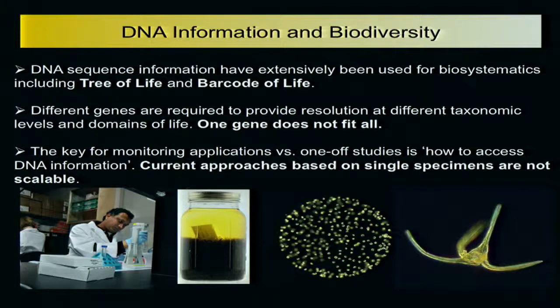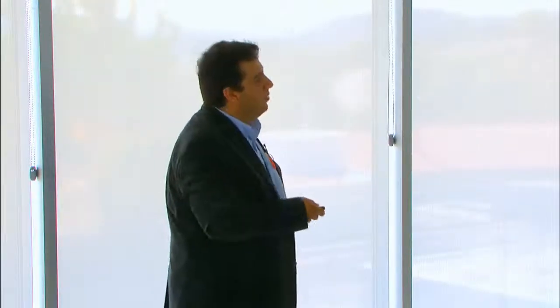The other thing that is even more important to me is the way we access the information. Here is my former postdoc Suresh, basically putting bugs from a jar one by one to do the Sanger sequencing — the typical barcoding approach. This is doable when you want to build a library, but it's not doable when you want to monitor things at higher frequency. With protists, you can't even isolate them because they're very small — you can't use the typical single specimen approaches.